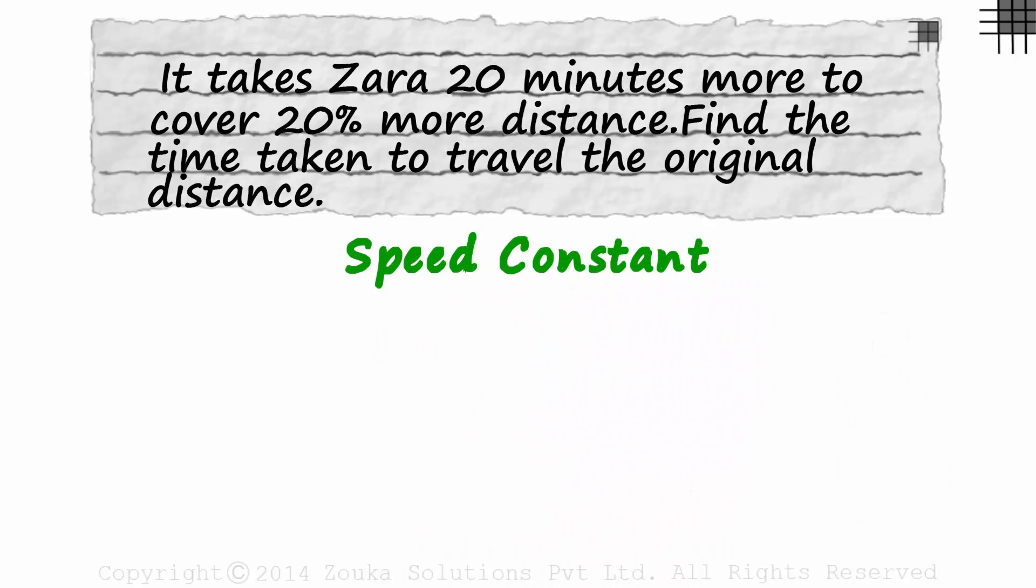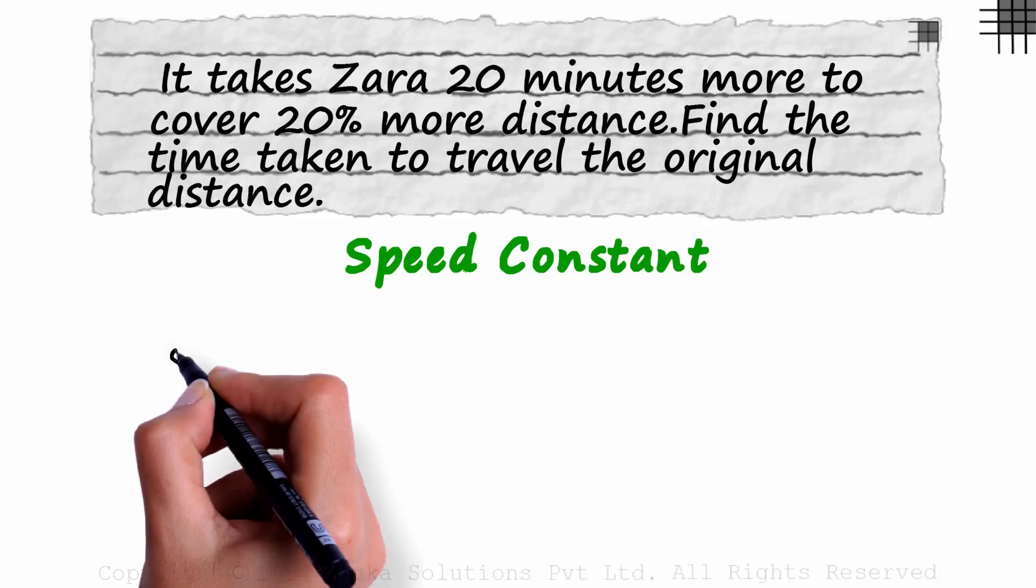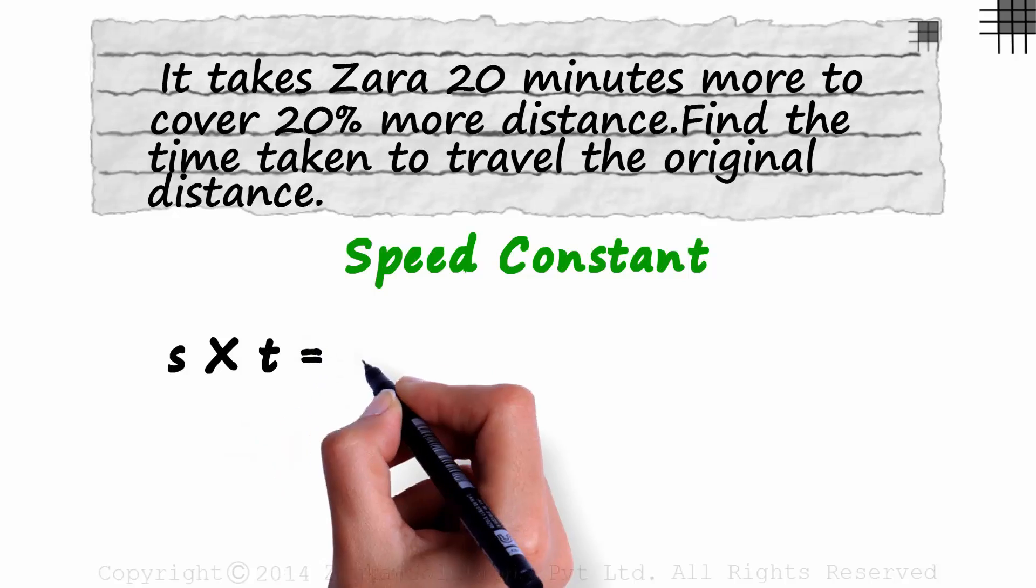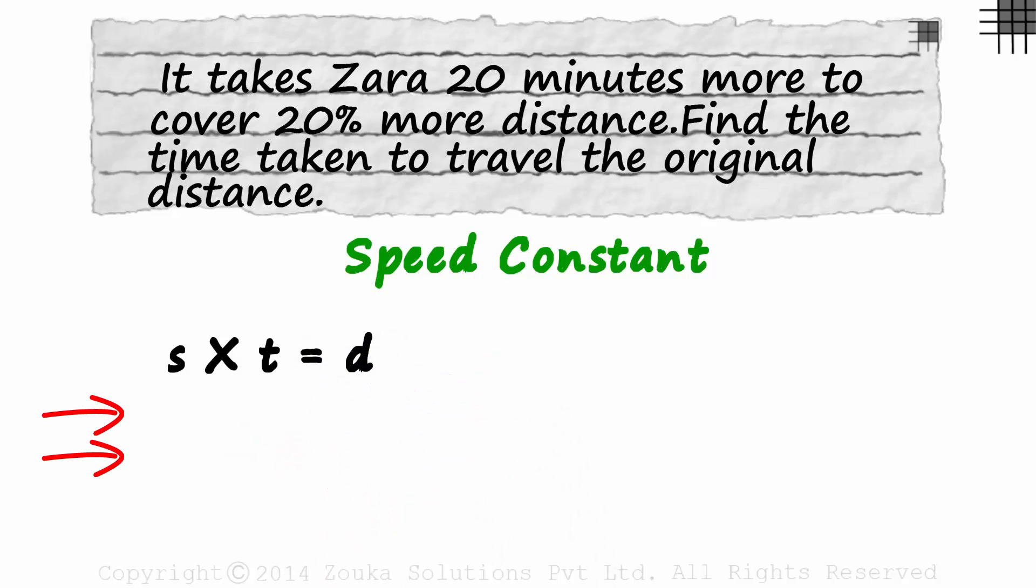Whenever there are two parts to a problem, the easiest way to understand it is by using the speed multiplied by time is equal to distance formula for each case. Now as we haven't been given a numerical value for any of the parameters, let's assume this to be our first case. Zara travels at speed S for time T and covers distance D. Now let's talk about the second case.